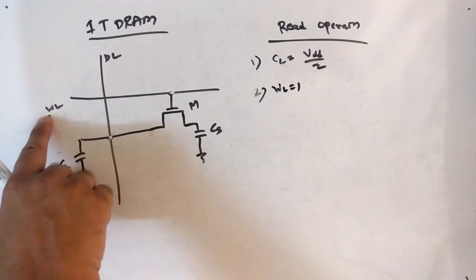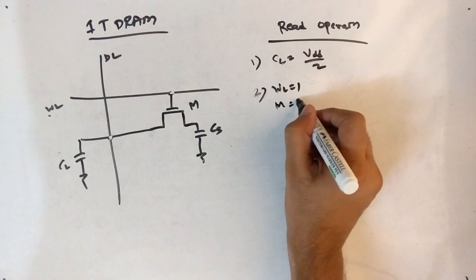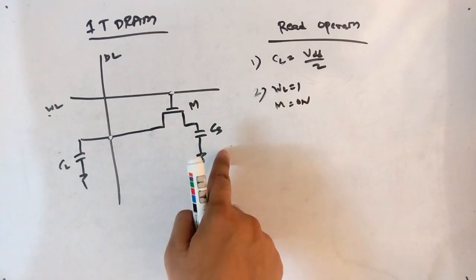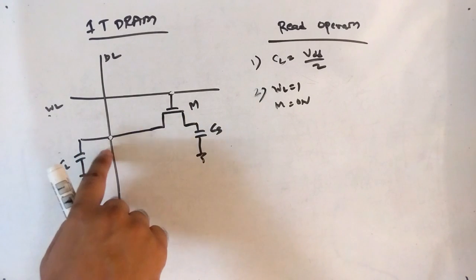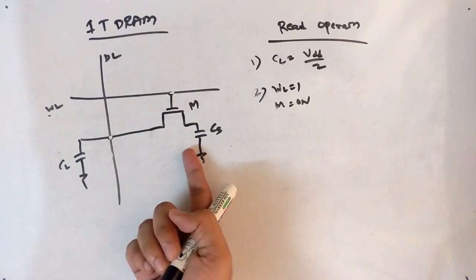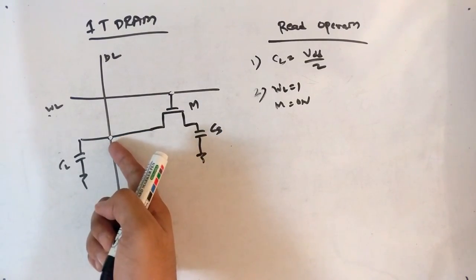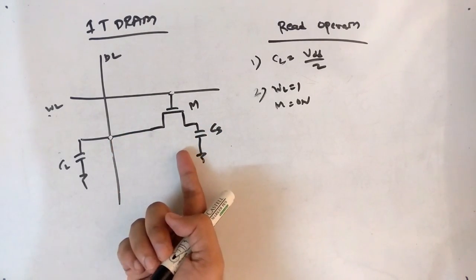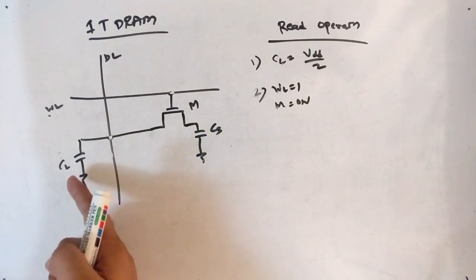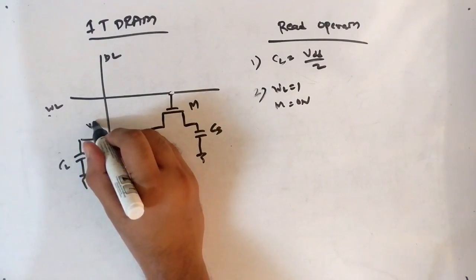The second point: if the word line is 1, then transistor M is ON. If M is ON, the storage capacitor CS can share its voltage with the data line. If CS has a voltage of 1, it shares to the data line; if the voltage is 0, that too is shared to the data line. Since CL is pre-charged to VDD/2, the data line starts at VDD/2.